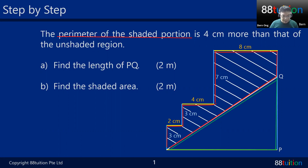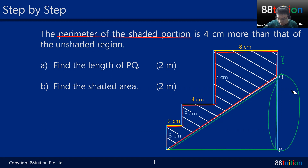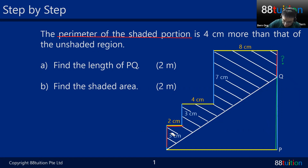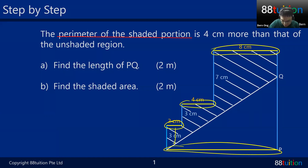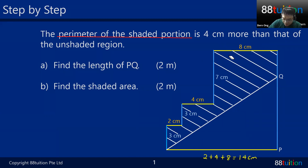Part A asks us to find the length of PQ, which is here. Before finding PQ directly, I can find the length of this portion first. From the color coding, you can see three yellow segments. Bringing them down: 2 + 4 + 8 = 14 cm. This means the length of this whole portion from here to here is 14 cm.